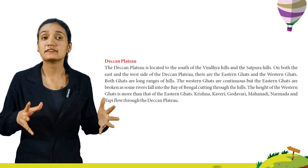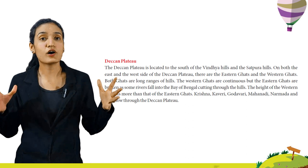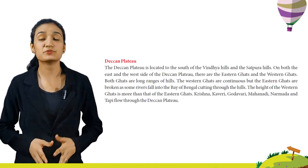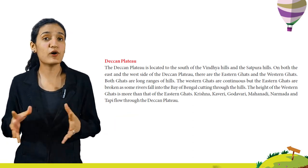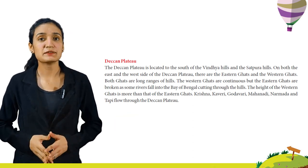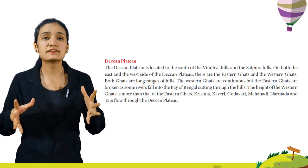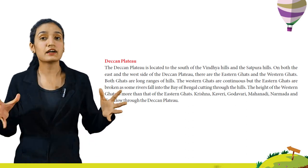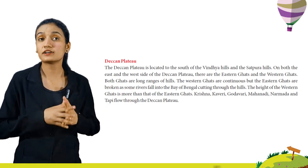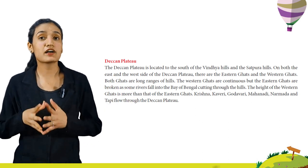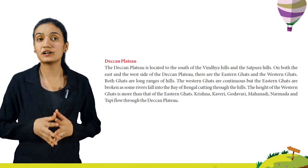The Deccan Plateau is located to the south of the Vindhya Hills and the Satpura Hills. On both the east and west sides of the Deccan Plateau, there are the Eastern Ghats and the Western Ghats — both are long ranges of hills. The Western Ghats are continuous but the Eastern Ghats are broken as some rivers fall into the Bay of Bengal, cutting through the hills. The height of the Western Ghats is more than that of the Eastern Ghats. Krishna, Kaveri, Godavari, Mahanadi, Narmada and Tapi flow through the Deccan Plateau.